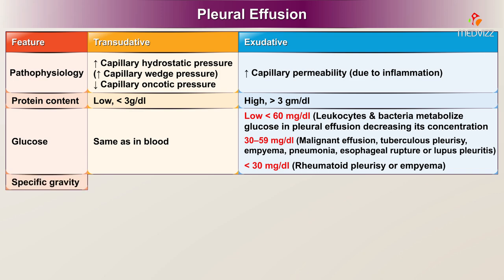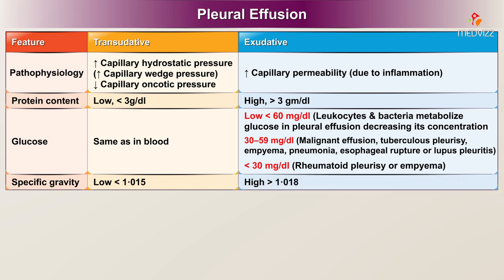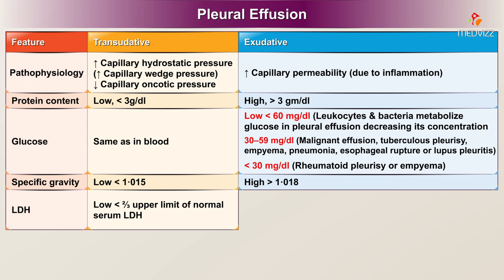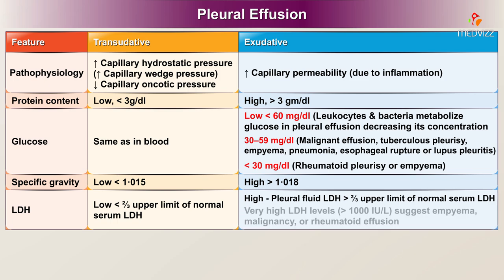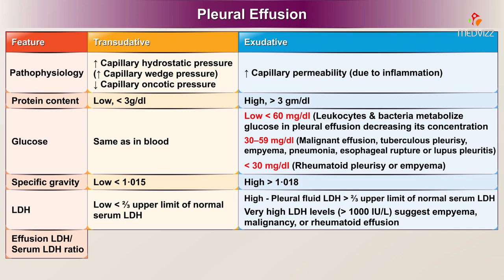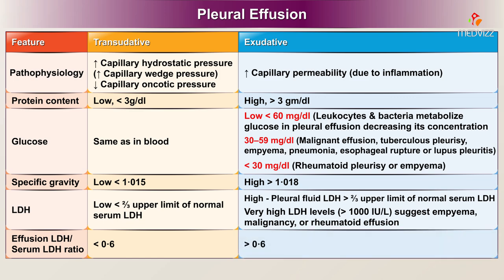Specific gravity for a transudate is low, less than 1.015, and it is high for an exudate, more than 1.018. LDH is low for a transudate, less than two-thirds of the upper limit of normal serum LDH. It is high in an exudate, with pleural fluid LDH more than two-thirds the upper limit of normal serum LDH. Very high LDH levels, for example more than 1000 IU per liter, suggest empyema, malignancy, or rheumatoid effusion. The effusion LDH to serum LDH ratio is less than 0.6 in a transudate and more than 0.6 in an exudate.